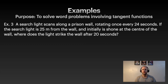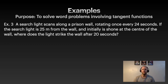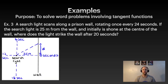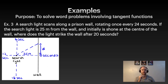Now for some word problems. A searchlight scans along a prison wall, rotating once every 24 seconds. The searchlight is 25 meters from the wall and starts pointed at the center. We want to know where the light strikes the wall after 20 seconds. Looking at the diagram: starting at 0 seconds pointing right, at 6 seconds it's at 90 degrees, at 12 seconds pointing the other direction, at 18 seconds pointing down, and back at 24 seconds.